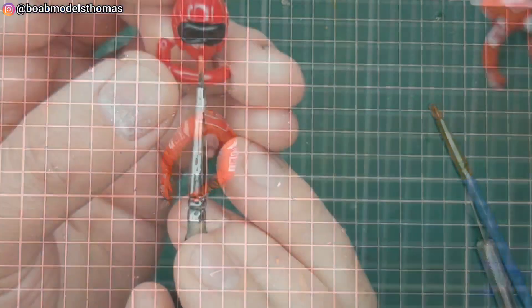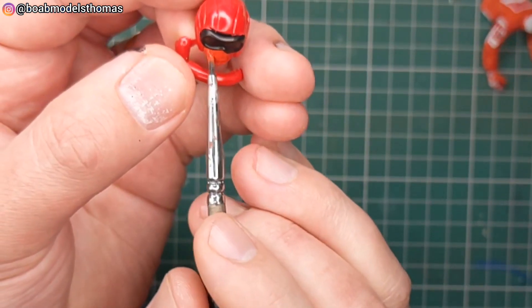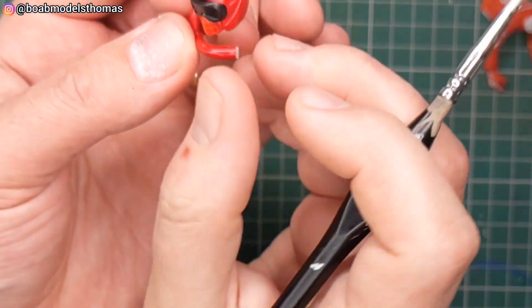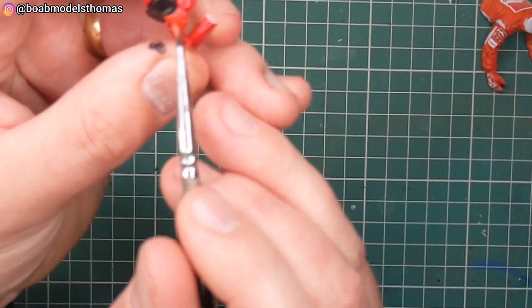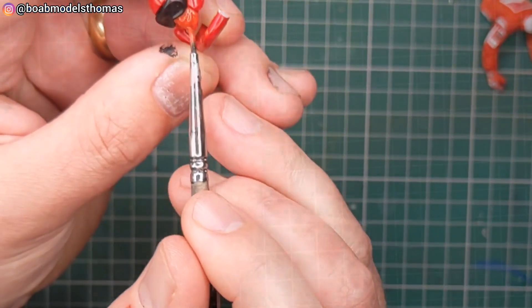Now the helmets were done in Italian red gloss from Tamiya. I then did the masks in semi-gloss black from Revell and more of the Carmen red for this chin covering part here.